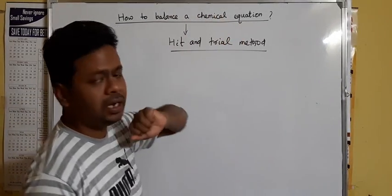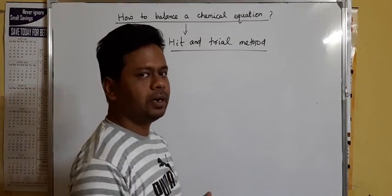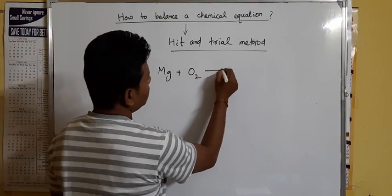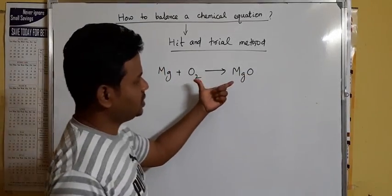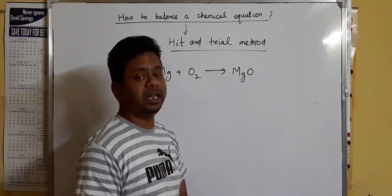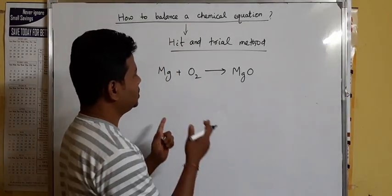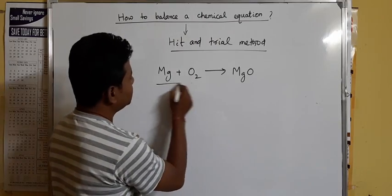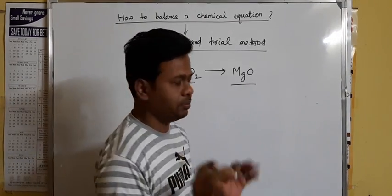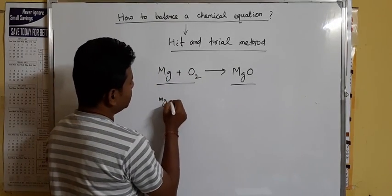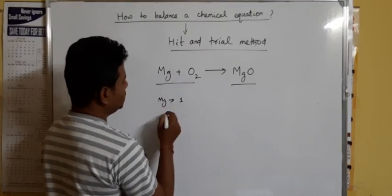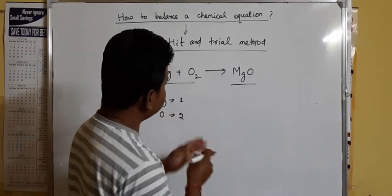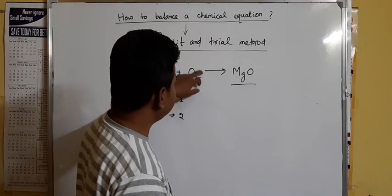We will take an example: magnesium Mg plus O2 gives rise to MgO, magnesium oxide. This is a very simple chemical equation but it is unbalanced — that is, a skeletal chemical equation. In an unbalanced chemical equation, the number of atoms of each element on the reactant side and product side are not the same. The magnesium atom here is only one, whereas the oxygen atom on the reactant side is two.